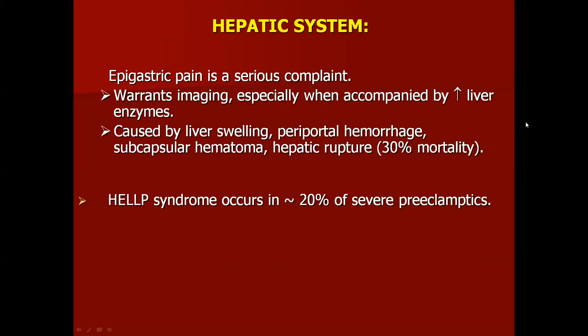In the liver, if the patient complains of epigastric pain or right hypochondrium pain, it warrants imaging — MRI or CT — as it is usually accompanied by elevated liver enzymes caused by liver swelling. There are chances of periportal hemorrhage, subcapsular hematoma, and even hepatic rupture, which significantly adds to the mortality of these patients.